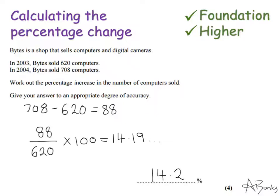If this question had been a percentage decrease question instead, the process would have been exactly the same. I'd have worked out what the change was and made sure I divide that by the original starting amount, which in a decrease question would be the bigger of the two numbers, and then multiply by 100.